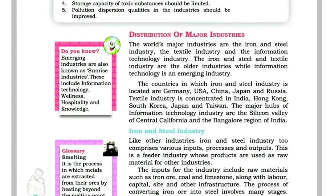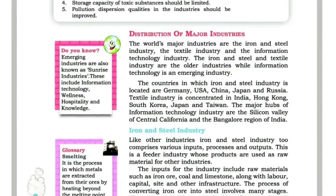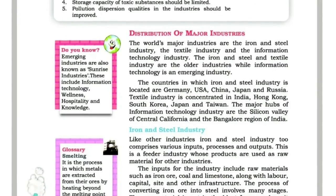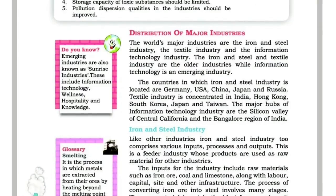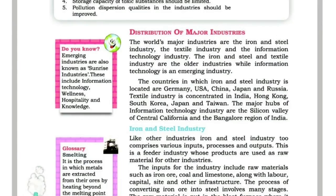The inputs for the industry include raw materials such as iron ore, coal and limestone, along with labour, capital, sites and other infrastructure.